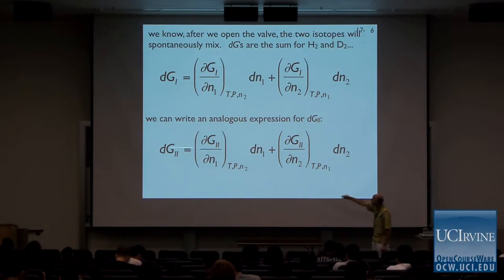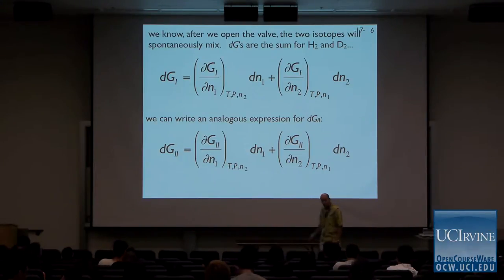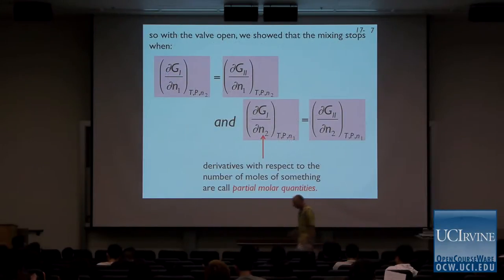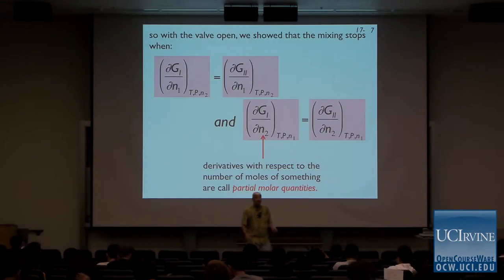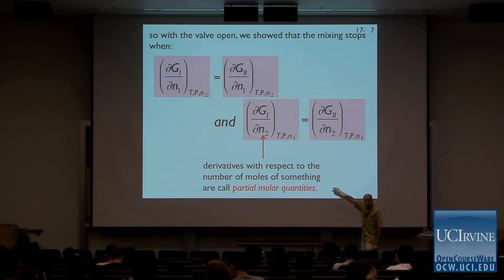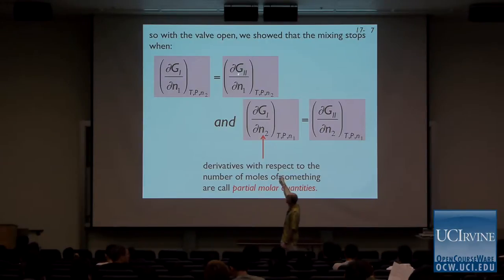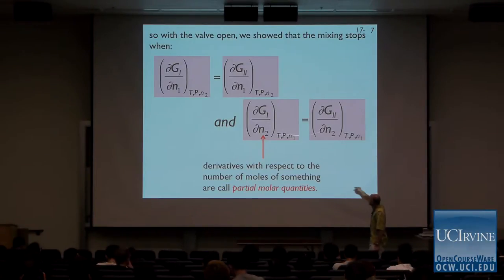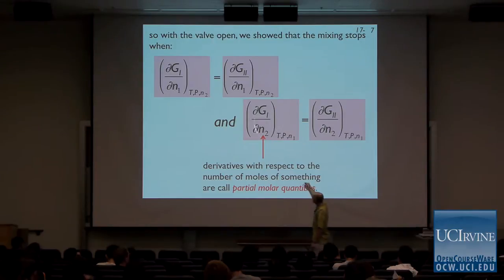Here's the left-hand side, here's the right-hand side, component one and component two. Considering that anything that leaves the right-hand side has to enter the left-hand side and vice versa, we can write a second pair of equations. What this says is: the partial derivative of the free energy on the left side and the partial derivative of the free energy on the right side — those two things have to be equal to one another at equilibrium. The same thing has to be true for component two.